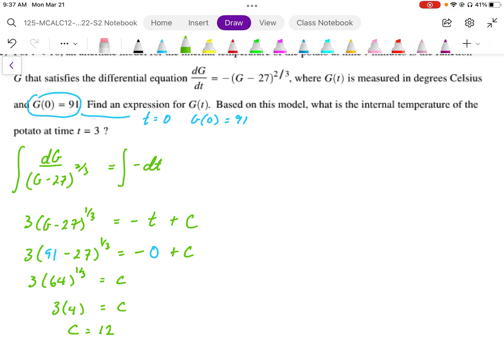Now we have our C, so we can rewrite this equation. We're going to solve for the G equation. So plugging this in, we're going to end up, first of all, 3, I'm going to write this in the cube root form, (G minus 27) equals negative t plus the 12 that we solved for.